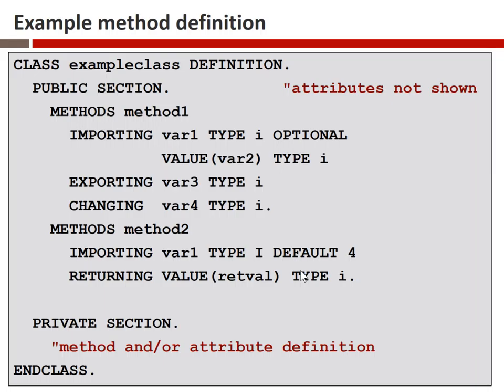The reason method one can't be a functional method is that it uses a changing parameter — as soon as that's present, we can't use a functional method interface. Method two, however, is a functional method. It imports a single parameter var1 of type I with a default value of 4, and returns a parameter called retval of type I. As an observation, these are terrible parameter names — just for illustrating syntax. When writing your own code, you definitely want to use better parameter names than what's shown here.